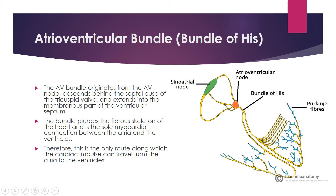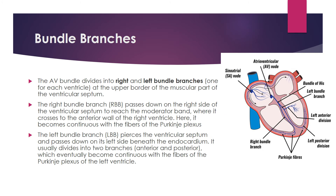The AV bundle extends into the membranous part of the ventricular septum. The ventricular septum has two main parts: the upper membranous part and the lower muscular part. The bundle of His is present in the membranous, upper part. The bundle pierces the fibrous skeleton of the heart and is the sole myocardial connection between the atria and the ventricles, making it the only route along which the cardiac impulse can travel from atria to ventricles.